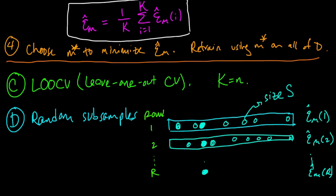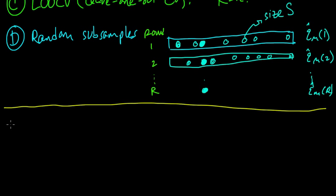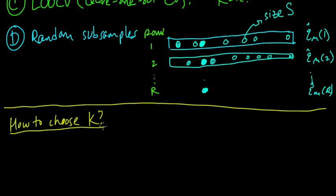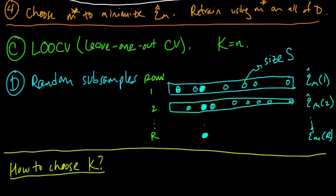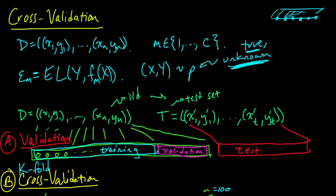We've talked about what k-fold cross-validation is, but we haven't really talked about how to choose k. What is a good value of k to choose? So let's talk about how to choose k for k-fold cross-validation, and let's think about what our criteria for choosing k should be.